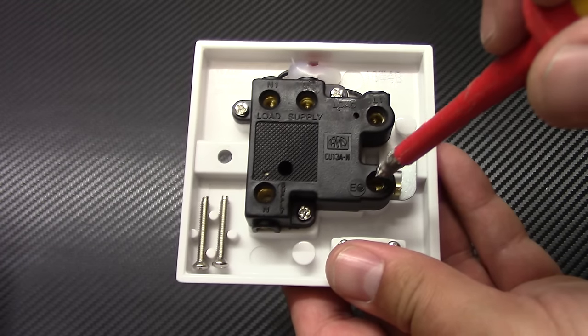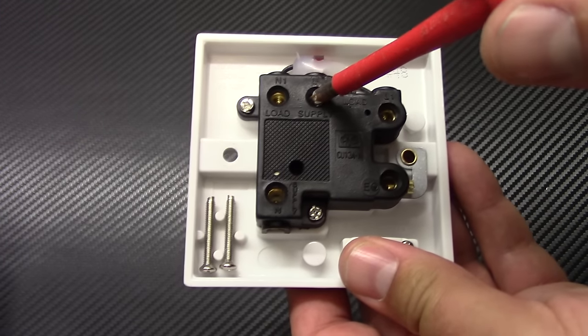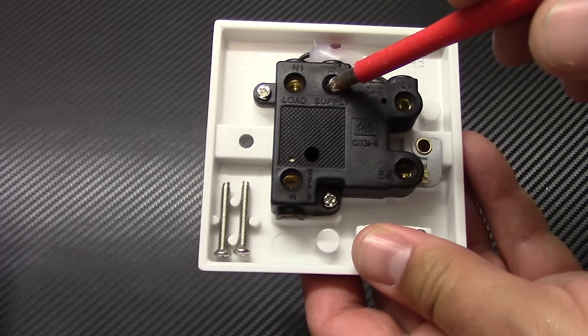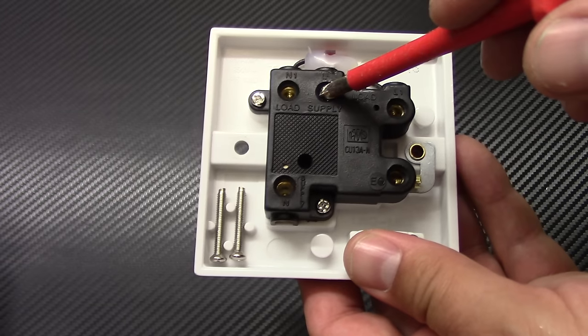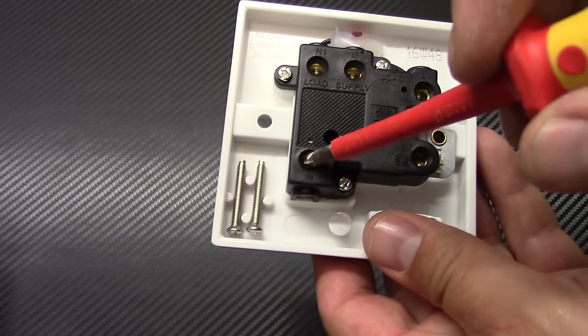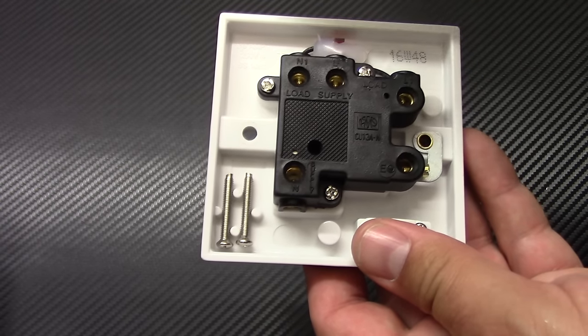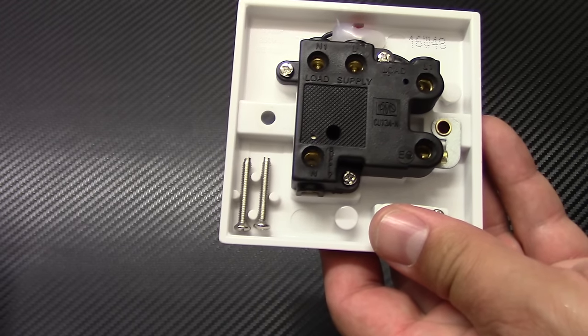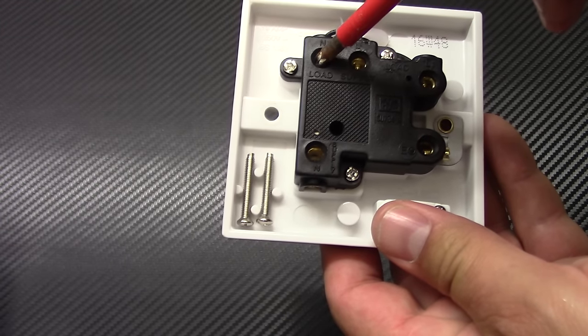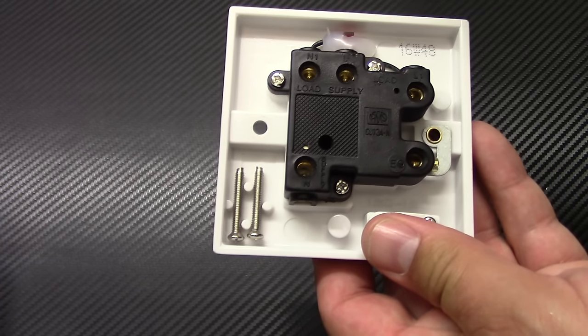And also the earth terminal when you connect both wires. So to the supply you connect the wires coming from the ring for example or from the mains. To the load you connect the wires that are going into the fused spare. Or to the washing machine or dishwasher or underfloor heating mat.